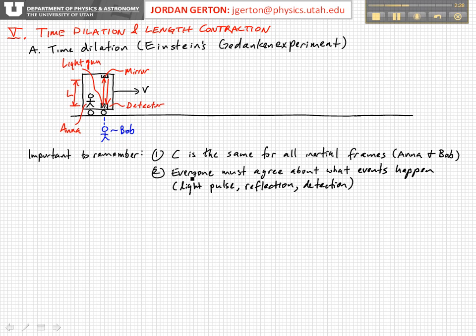Second, everyone—Anna and Bob in this case—must agree about which events happened. They must agree there was a light pulse, a reflection off the mirror, and a detection event. These are three distinct events that occur at particular points in space and time, and both observers must agree on them.